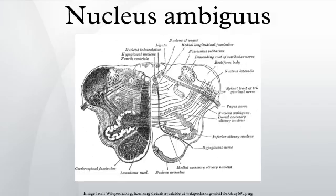The nucleus ambiguus is a group of large motor neurons situated deep in the medullary reticular formation. It contains the cell bodies of nerves that innervate the muscles of the soft palate, pharynx, and larynx, which are strongly associated with speech and swallowing. It is a region of histologically disparate cells located just dorsal to the inferior olivary nucleus and the lateral portion of the upper medulla, and it receives upper motor neuron innervation directly via the corticobulbar tract.